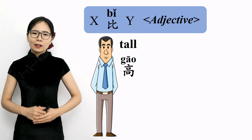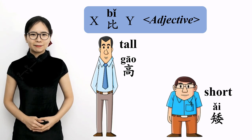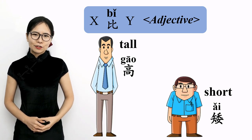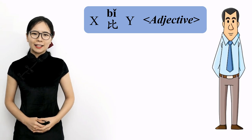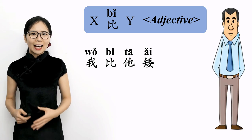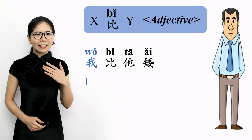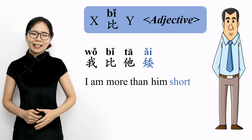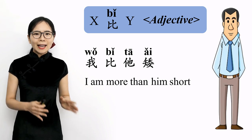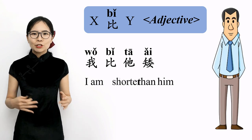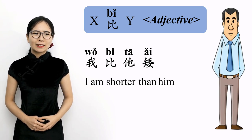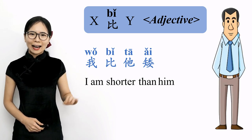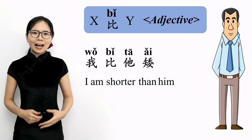The opposite of tall, 高, is 矮 — short. Please repeat after me: 矮 — short. If he is taller than me, I must be shorter than him. So I can also say 我比他矮. 我 means I, 比 means am more than, 他 means him, and 矮 is an adjective meaning short. Literally, 'I am more than him short.' In other words, I am shorter than him. Please repeat after me: 我比他矮. 我比他矮 — I am shorter than him.